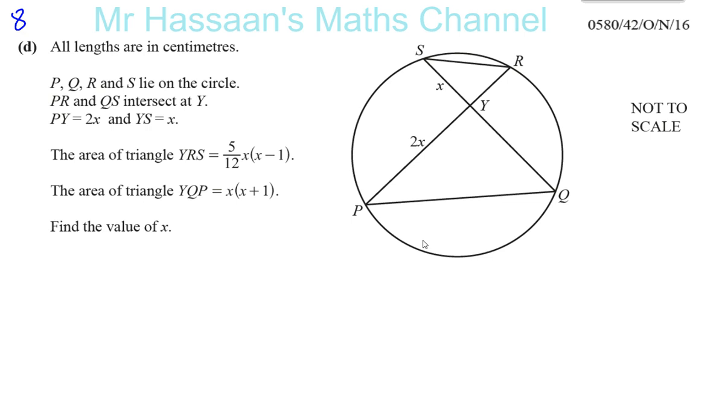Now there's a few things we can see here. I know these two triangles are similar. How do I know they're similar? Well, I know this angle is the same as this angle because they both stand on the same arc. They're both standing on RQ.